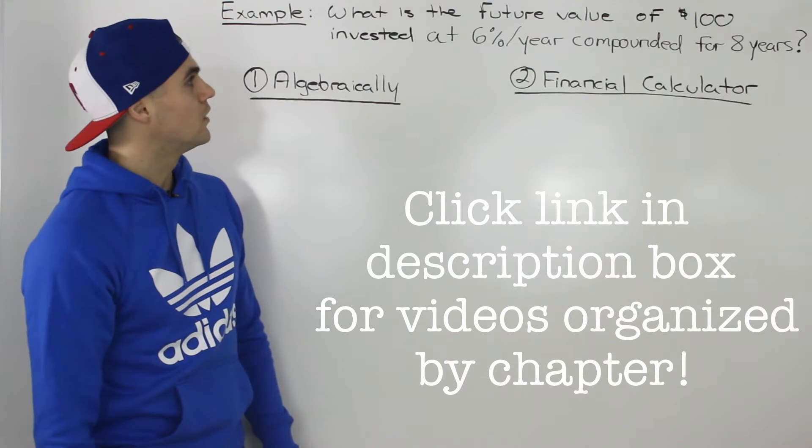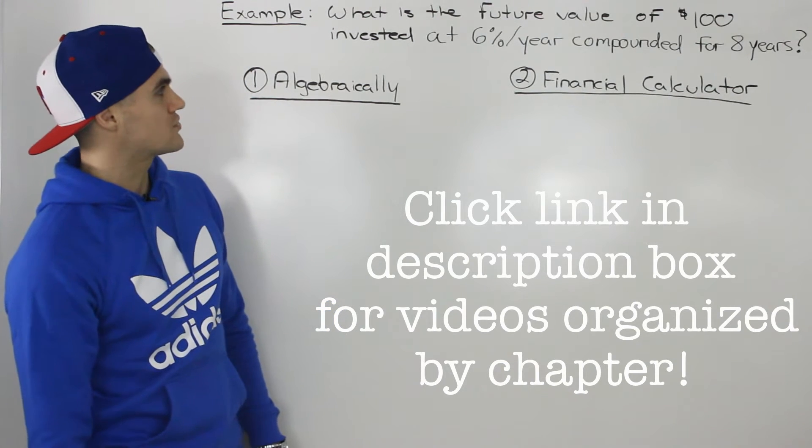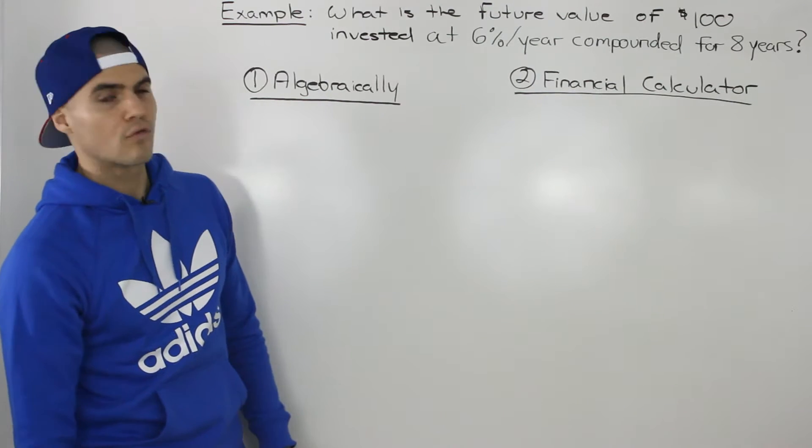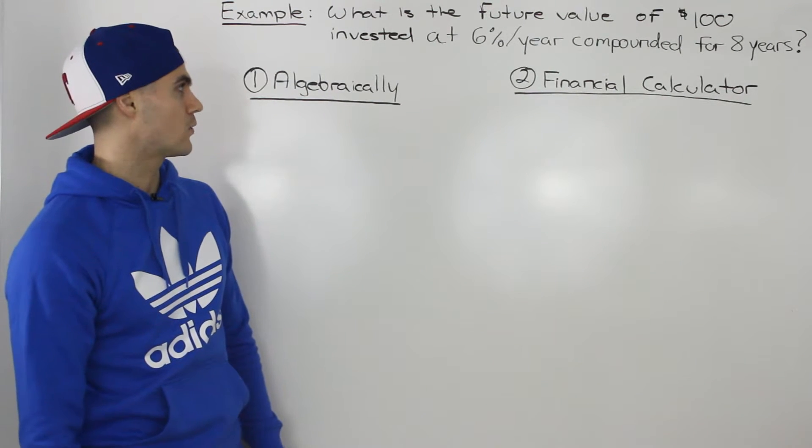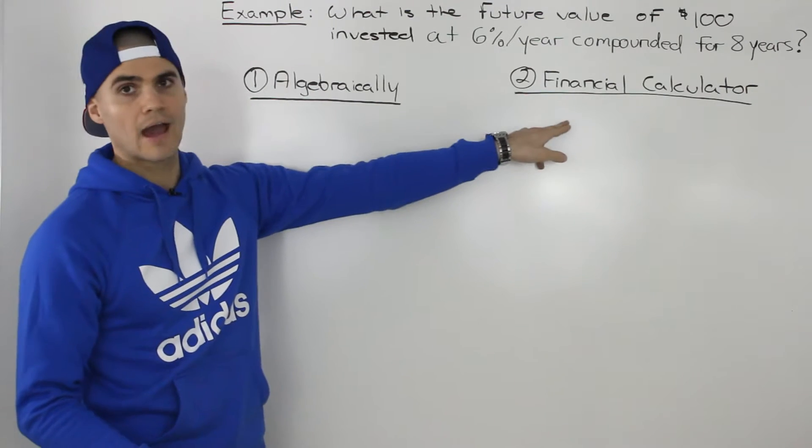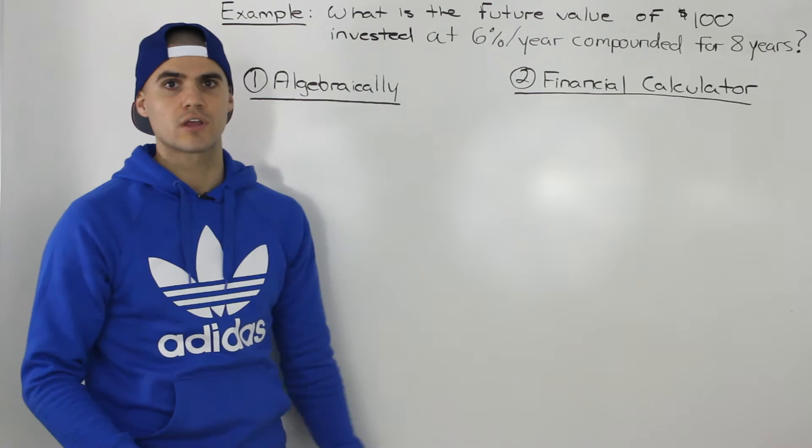Moving on to the next example, what is the future value of $100 invested at 6% compounded interest per year for 8 years? So we're going to solve this in two different ways, algebraically and how we would do it with a financial calculator.